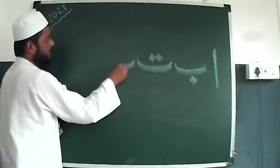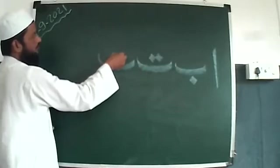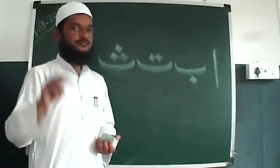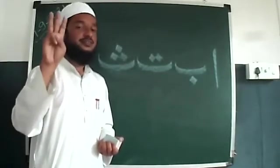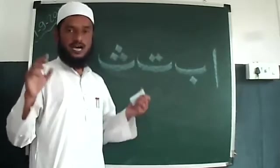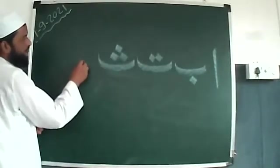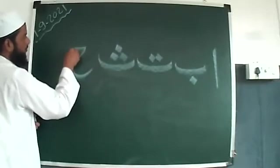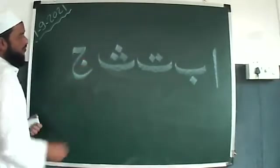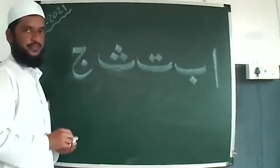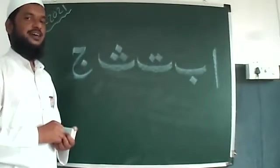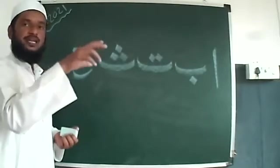Tiny board above the line, three dots: Sa (Tha). Sa for Salasa, which means three, and Sa for Salab (fox). Sleeping line with a big curve below the line, one dot: Jim. Jim for Janna (paradise), and Jim for Jamal (camel).